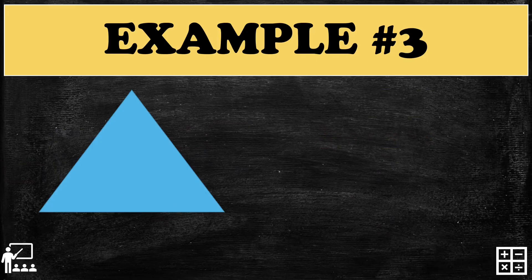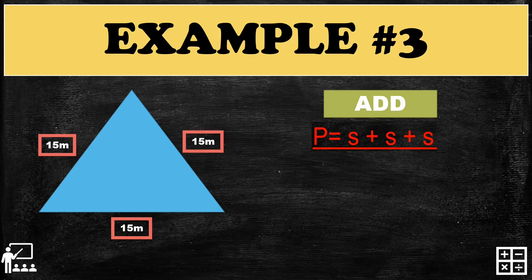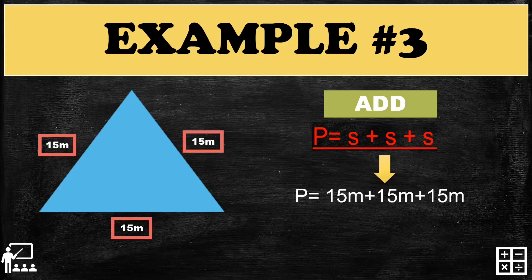Let's try another example. As you can see, this triangle has three equal sides, each measuring 15 meters. Using the formula P equals S plus S plus S, substitute: 15 meters plus 15 meters plus 15 meters. What do you think the answer is? Can you guess? Very good — it's 45 meters!